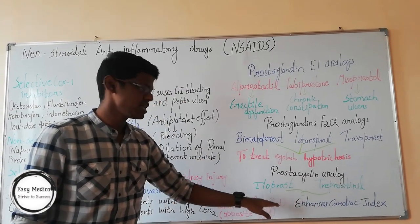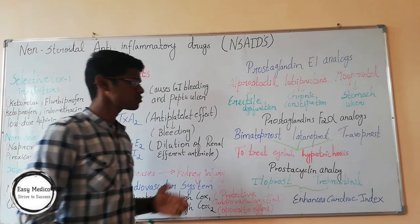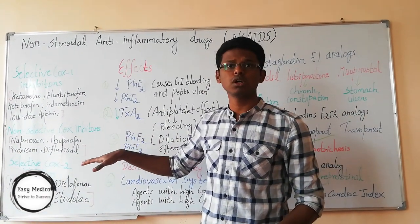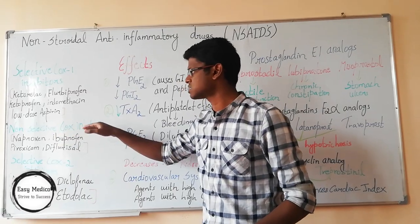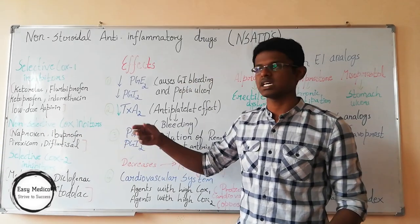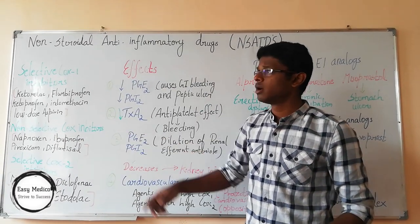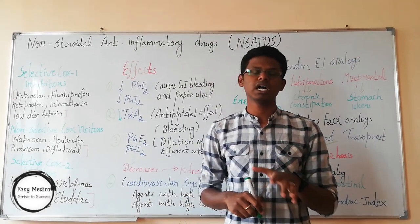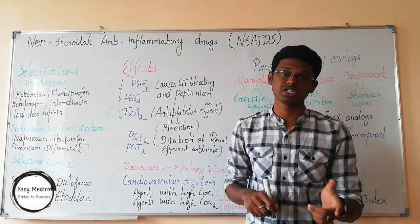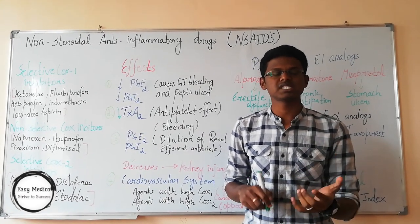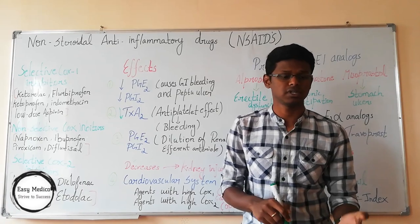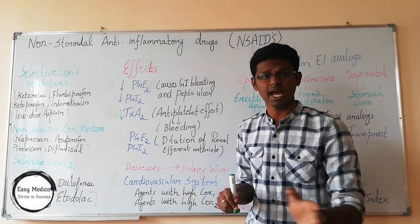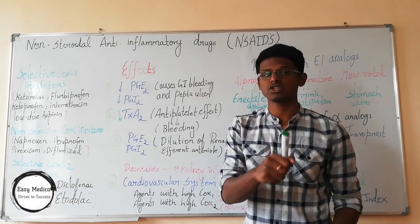Next, prostacyclin analogs. These include iloprost and treprostinil. These enhance the cardiac index. This is just an overview of drugs. Moving on to detail in non-selective inhibitors, you will find salicylates. One common syndrome associated with this is Reye's syndrome, which affects mostly children, affecting the liver and brain after the onset of flu or chickenpox.